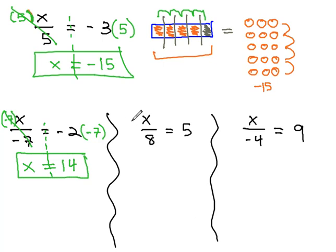Similarly, in the middle, x divided by 8, the opposite of dividing x by 8 is to multiply it by 8. And if we do it on one side, we must do the same thing on the other side of the equation. The 8's will divide out, and we get x is equal to 40.